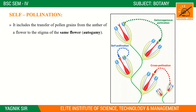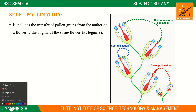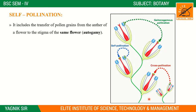Self pollination includes the transfer of pollen grains from the anther of a flower to the stigma of the same flower. You can see the flower diagram here — the structure of the flower is shown.